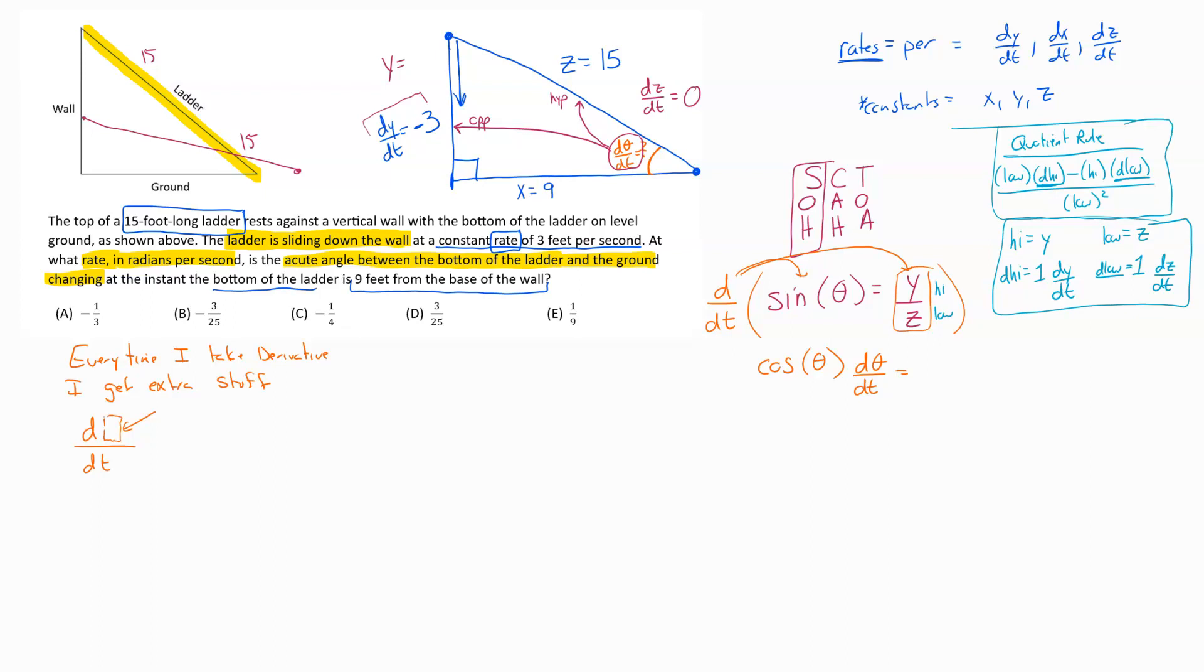So over here on the right-hand side, I follow the quotient rule recipe. The rule says low, so that's going to be z, times d high, that's going to be my - you don't really need 1 dy dt, that's just going to be dy dt - minus, go grab the high piece, so the high piece is y, and then multiply that by the d low, which is 1 dz dt, we don't need the 1, so we just plug in dz dt, and all of that is over the low squared, so all over z squared.